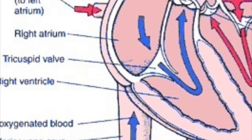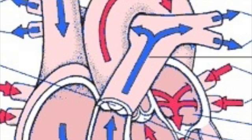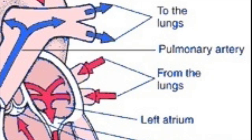The tricuspid valve, or right AV valve, directs the blood to the right ventricle. The right ventricle is a pump that pushes the blood up towards the pulmonary trunk and arteries.